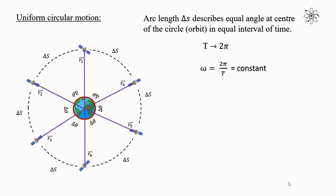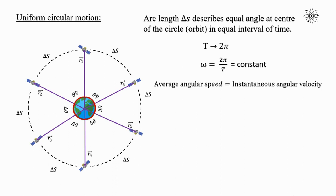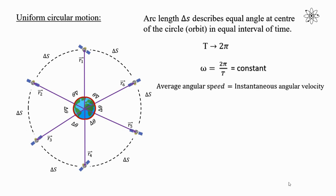That is, the angle described by the satellite per second is constant. As the angle described per second is constant, then the angle described for any finite time interval is also constant. But we know that for a finite time interval, the angular displacement is a scalar quantity. It is a vector quantity only when the angle is described for a small interval of time. Therefore, average angular speed is equal to instantaneous angular velocity, because the motion is uniform circular motion in which equal angle is covered in equal interval of time.